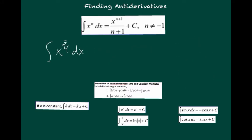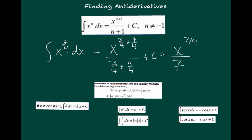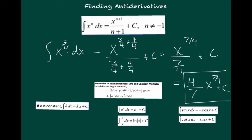The power rule even works if the exponent is a fraction. For example, the integral of x to the 3/4 dx integrates to x to the 3/4 plus 4/4, over 3/4 plus 4/4, plus c, which simplifies to x to the 7/4 over 7/4 plus c. When we simplify a fraction in the denominator, the easiest way is to flip it, so that becomes 4/7 times x to the 7/4 plus c. You can use this rule whether n, the exponent, is a positive number, a negative number, or a fraction — really anything except negative 1.